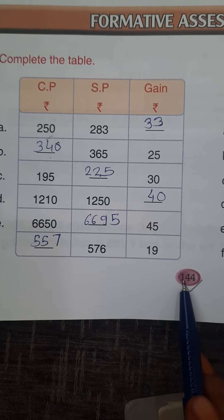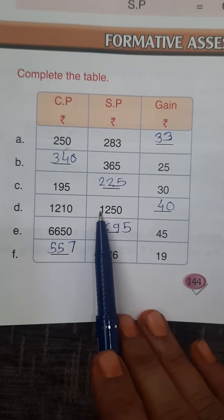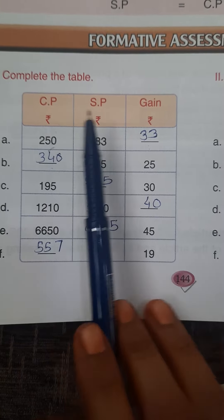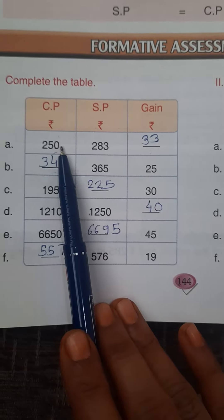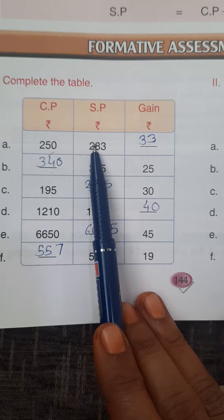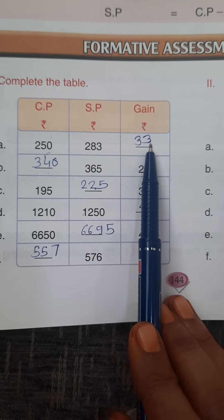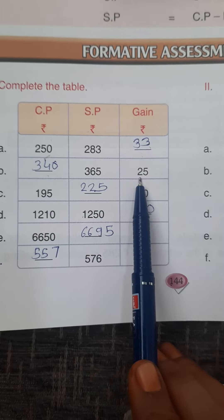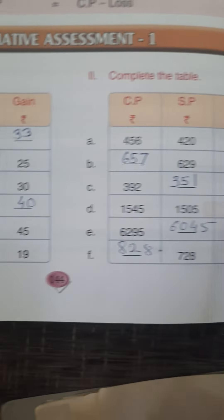Hello students, in your page number 144, in last period we saw that question where they give us CP, SP and gain. Sometimes they give us cost price, selling price and we find the gain or profit using that structure. Sometimes they give us selling price and profit and we find the cost price.